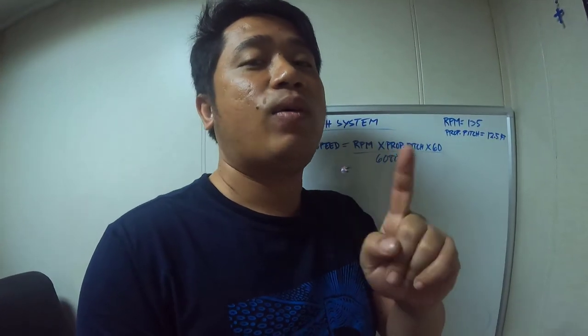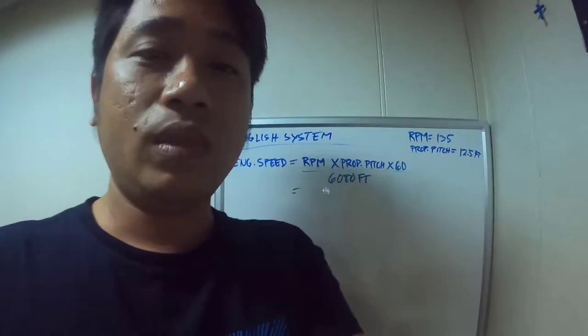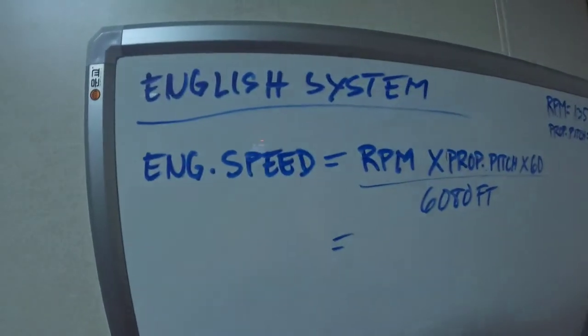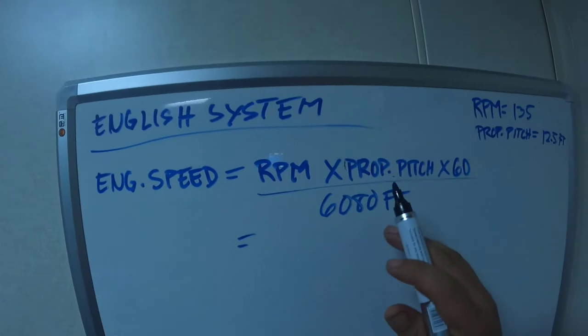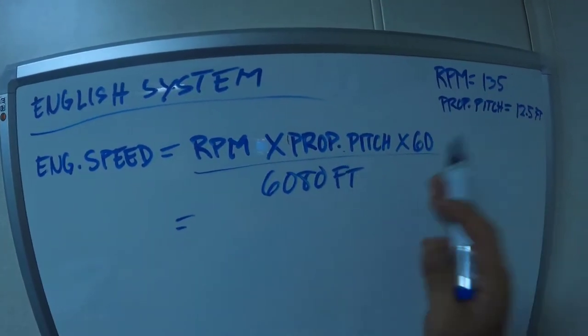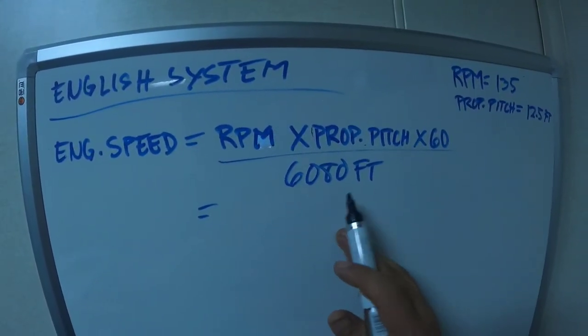So this is the first formula called the English system. It has engine speed equals RPM times propeller pitch times 60 divided by 6080 feet.